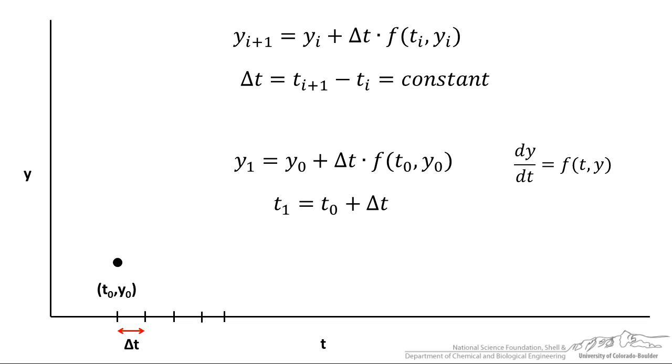The next time is just equal to the current time plus Δt, and when we do that we can calculate y1 and t1, and we can plot that, basically finding an estimate for that next function value y at the next time step.